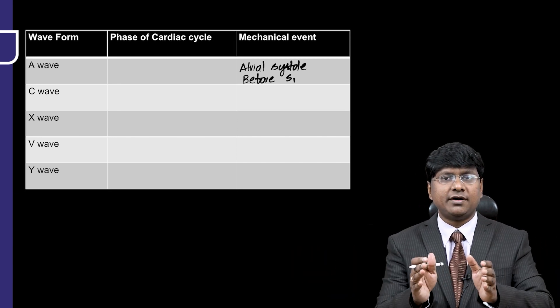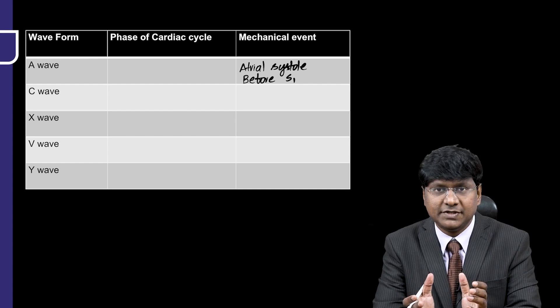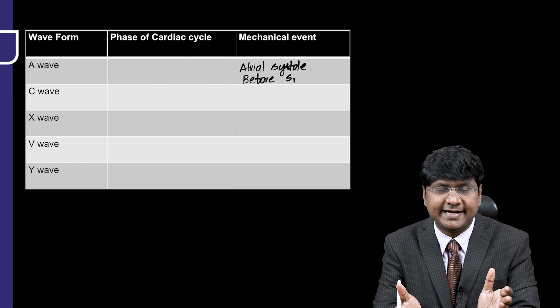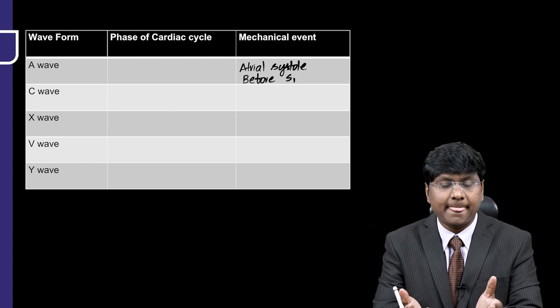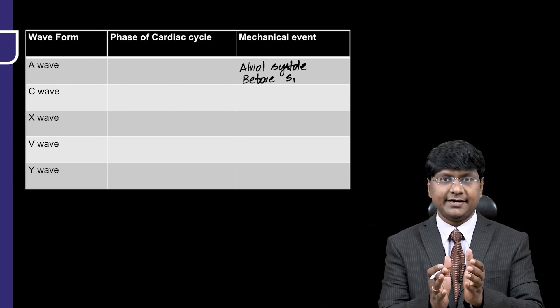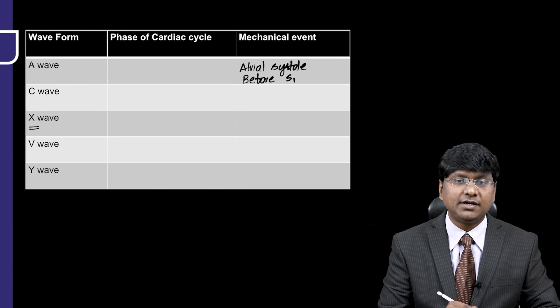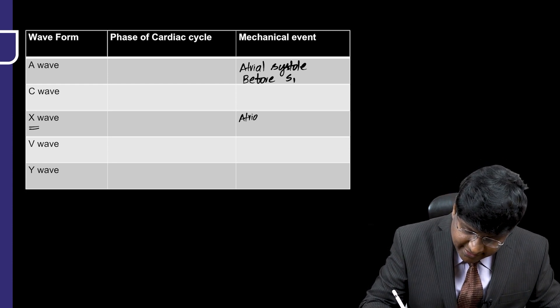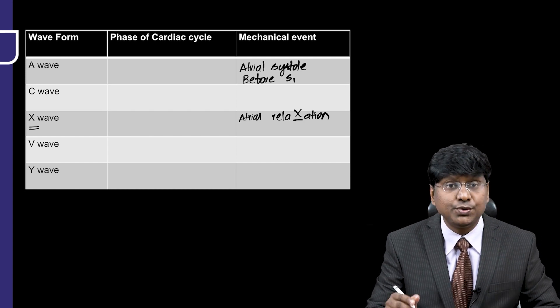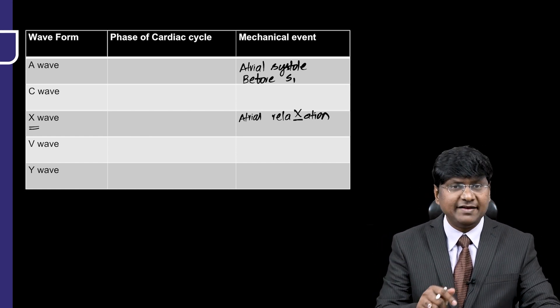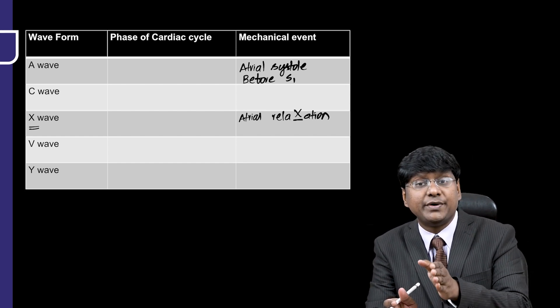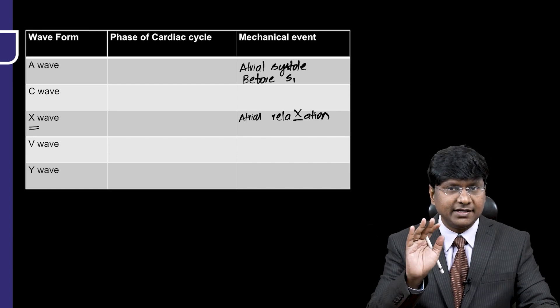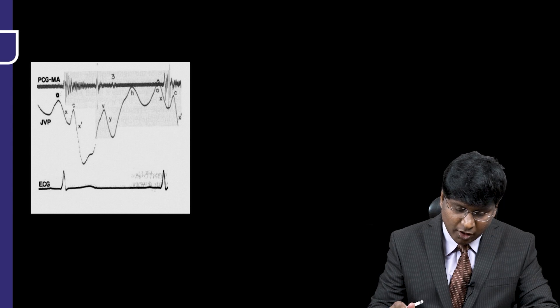Once the atria is contracting, the ventricle will be in relaxation — atrial systole is your A wave, and the ventricle is in diastole. The next event is the atria relaxing while the ventricle contracts. So the X wave is due to atrial relaxation. We also have two components: X and X-dash.